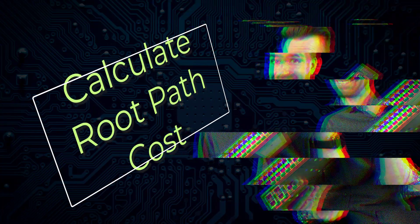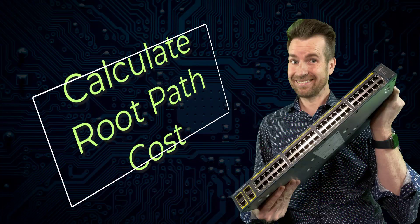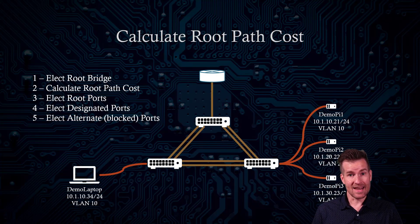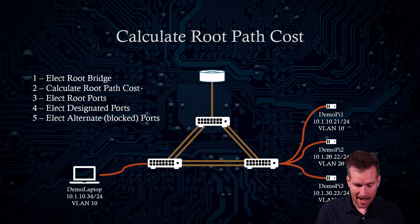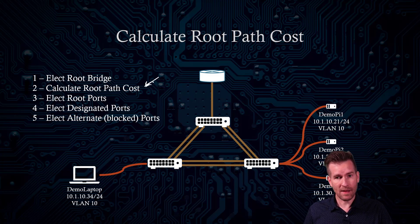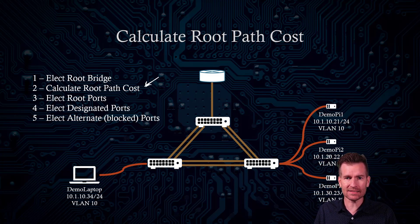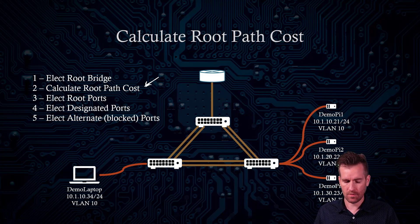This happens on a per-switch basis, so every switch is going to go through the same process. The next step is to calculate the root path cost — that's the cost of the path to that root bridge.